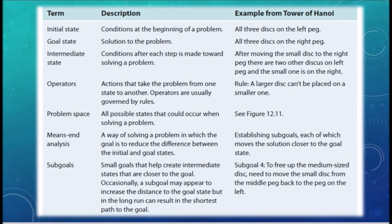The initial state is the beginning of a problem — the conditions at the start. The goal state is the solution to the problem. In between these two states, you take several steps toward solving the problem; these steps are called intermediate states. All three states together are known as the problem space — all possible states that could occur while solving the problem. Operators are the rules you have to follow to solve the problem. Means-end analysis means reducing the difference between the initial and goal states and creating sub-goals to reach closer to your goal.